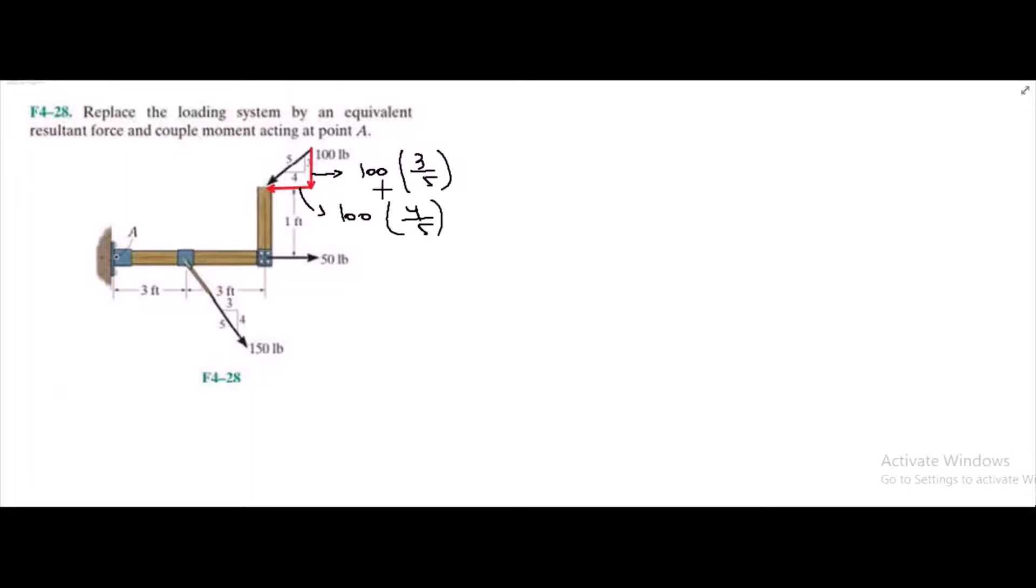Similarly, I have two components for the 150 lb force. I have one horizontal component and one vertical component. This vertical component equals 150 times 4 over 5 and this horizontal component is 150 times 3 over 5. Now we have resolved our forces into their components.